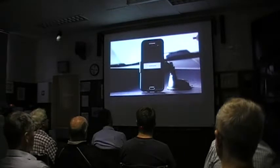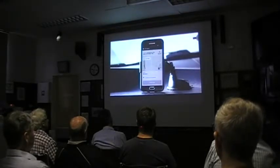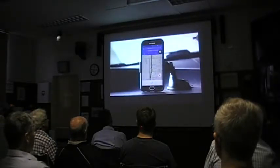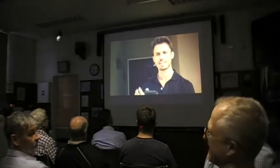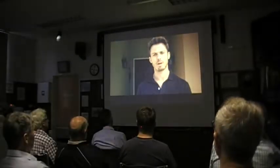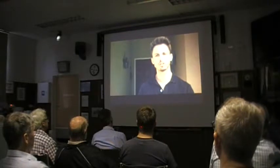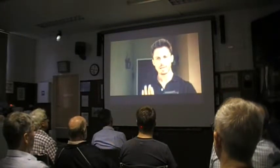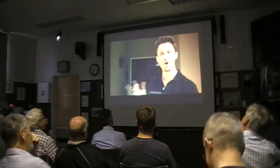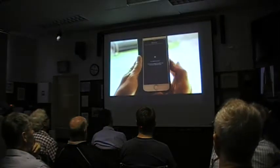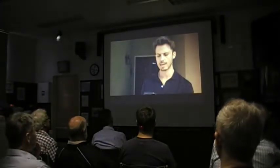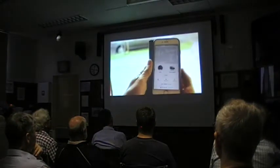The driver accepts by tapping anywhere on the screen, and the passenger's address shows up. Tap Navigate and you're ready to go pick up the passenger. As a passenger, you can enter your destination so the driver knows where you're going and you get an estimated fare. Once you request UberX, you can see which driver accepted - their name, photo, car type, and license plate number.